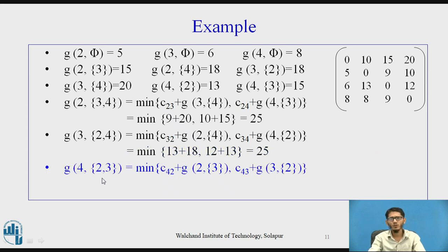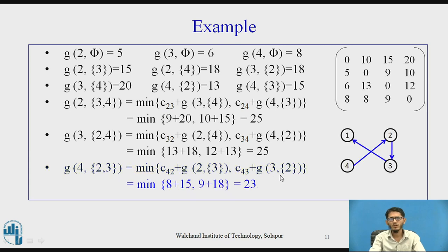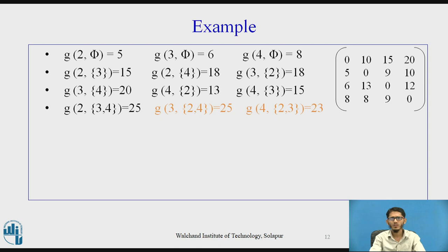Next, g(4, {2,3}) = minimum of [c_42 + g(2, {3}), c_43 + g(3, {2})] = minimum of [8 + 15, 9 + 18] = 23. This value of 23 comes from c_42 + g(2, {3}), representing the path 4 to 2, then 2 to 3, and finally 3 to 1, with a cost of 23. These are the two answers to the question that was asked.